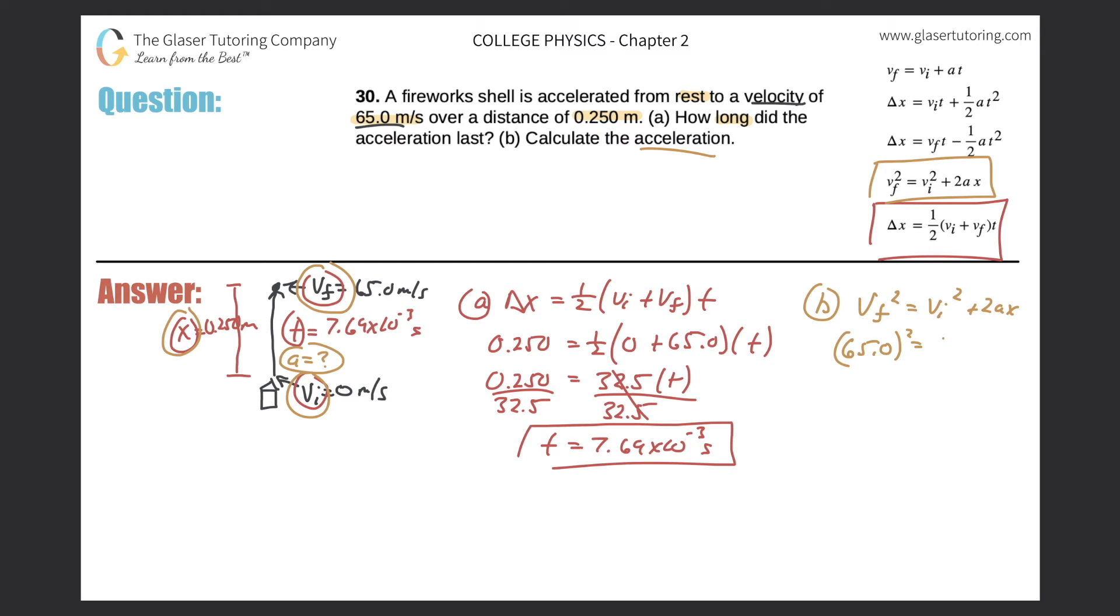So the final velocity of our firework is going to be 65.0 and that's squared. The initial velocity was zero because it started at rest. Now it's going to be plus two multiplied by my acceleration, which is what I'm trying to find, then multiplied by the displacement, which was 0.250.